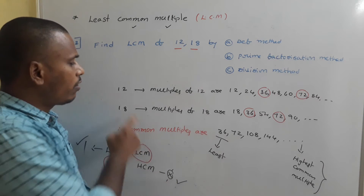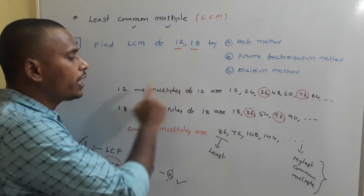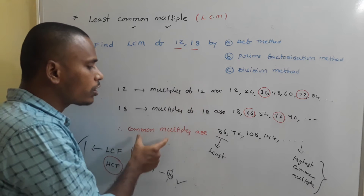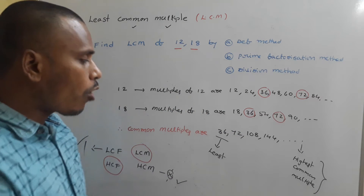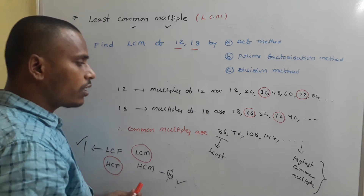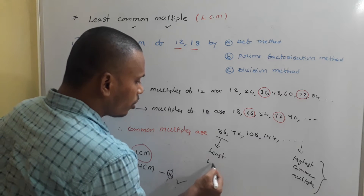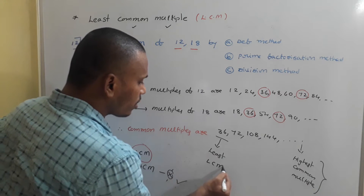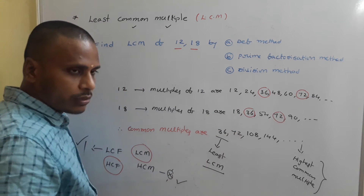By definition method, for 12 these are the multiples, for 18 these are the multiples, and common multiples are this list. Among these common multiples, 36 is the least one, so 36 is the LCM of the given two numbers.